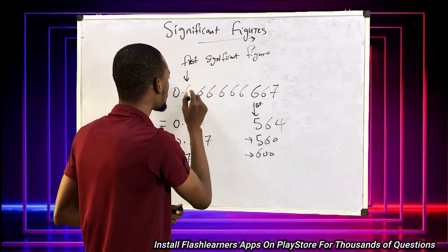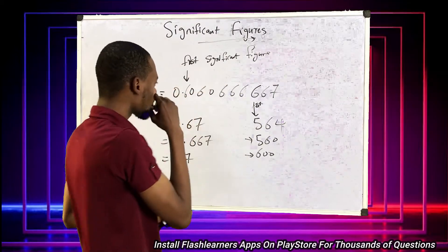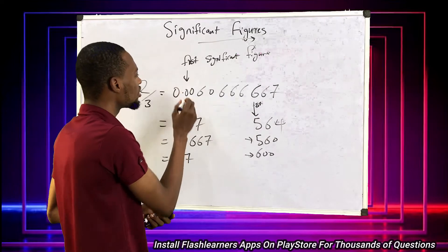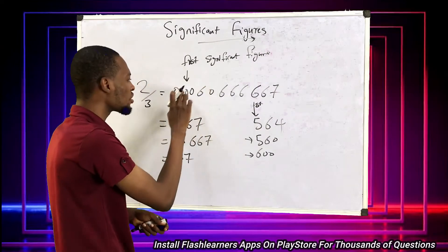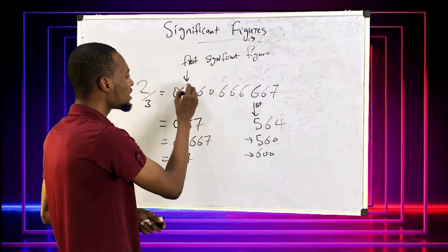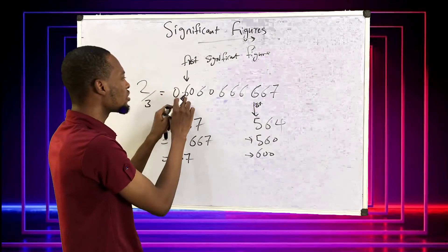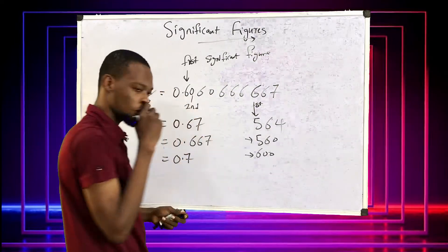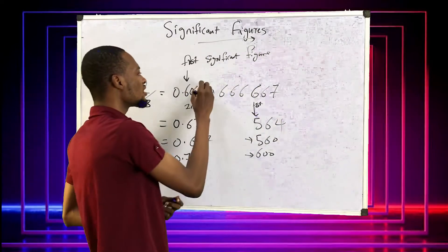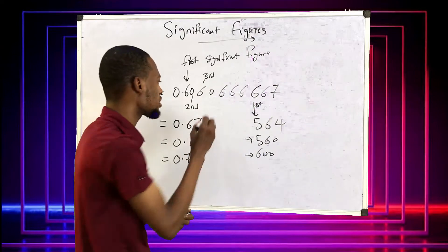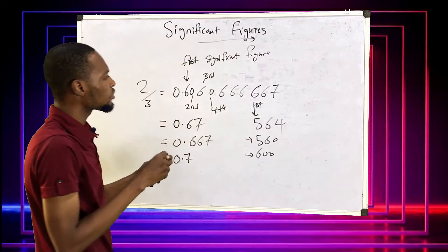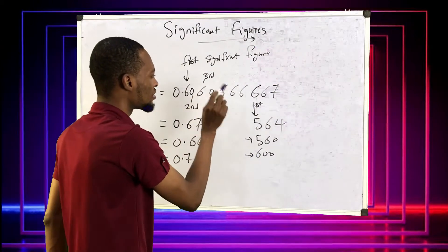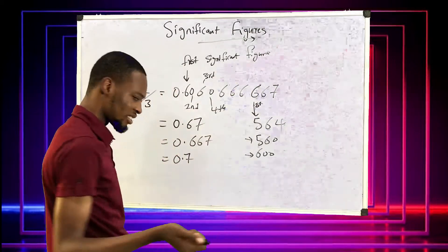So if I change some digits to zero, the first significant figure is still the first digit that is not zero. The second significant figure is zero, the third significant figure is zero. So after the first significant figure, the other figures are any other number — second, third, fourth, fifth, sixth, seventh, eighth, ninth, and so on. These are your significant figures.